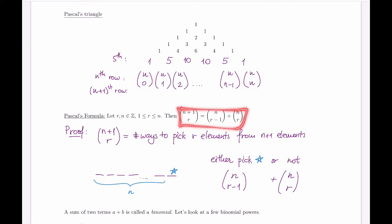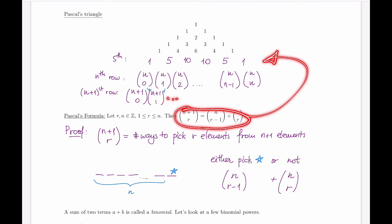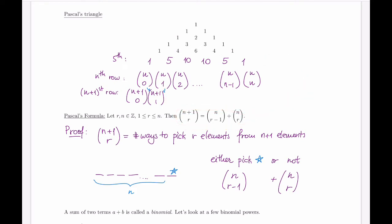Pascal's formula gives us proof that the next row is going to look exactly as we expect. We start with n+1 choose 0, then adding two adjacent elements — for example with r equal to one: n choose 0 plus n choose 1 produces n+1 choose 1. And so on for each element. This formula proves that the triangle is formed this way all the way down to infinity — if you add the two adjacent choose values, you produce the next correct value.